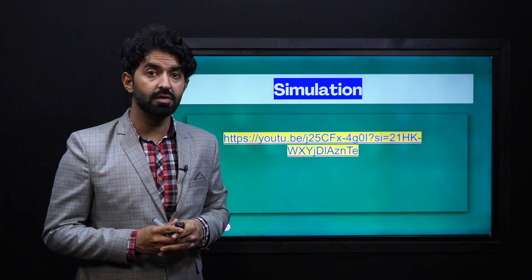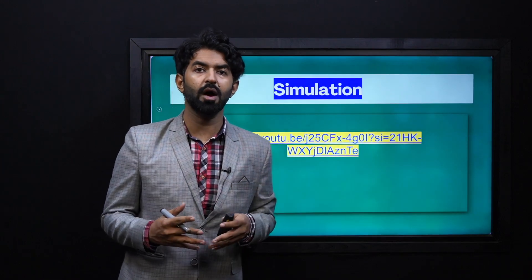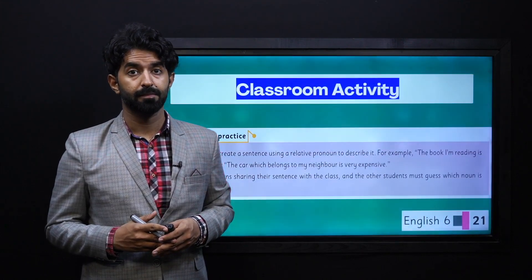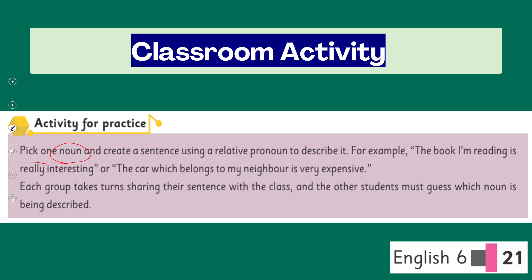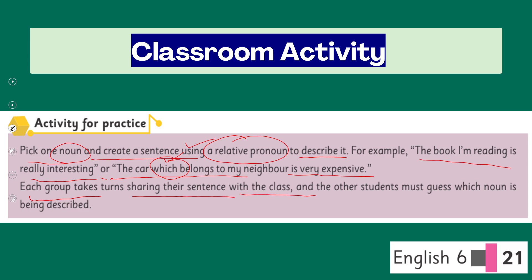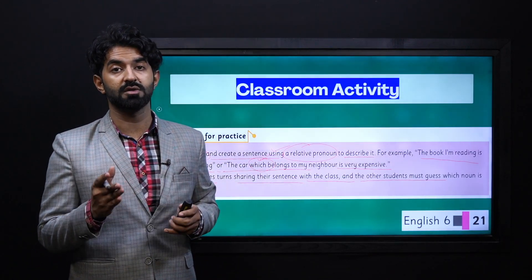There is a simulation video you can find easily in the description or in the presentation — you can watch it to learn more about relative pronouns and how they are used in different scenarios. Now, my dear learners, it is time to look at the classroom activity from page 21 of your book. You have to pick one noun and create a sentence using a relative pronoun to describe it. For example: 'The book I am reading is really interesting' or 'The car which belongs to my neighbor is very expensive.' Each group takes turns sharing their sentence with the class and other students must guess which noun is being described — it is all about referring back to the noun.